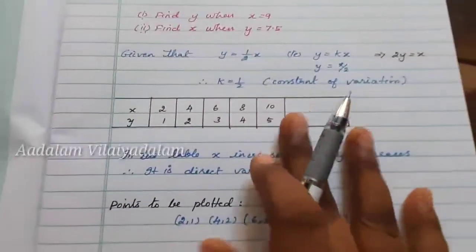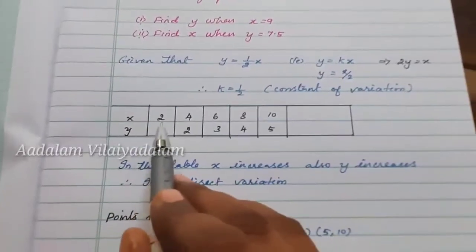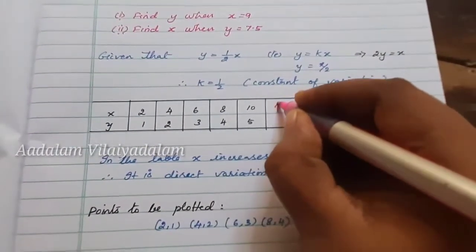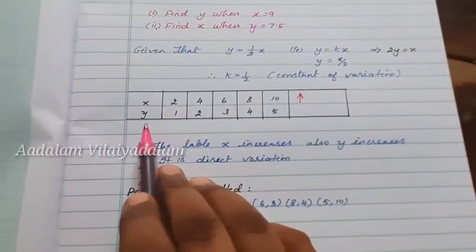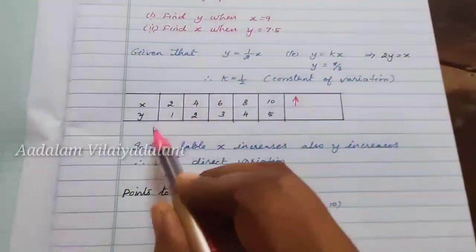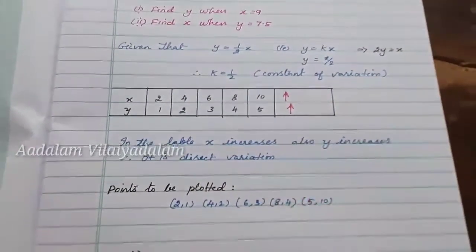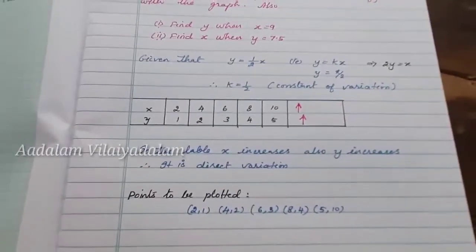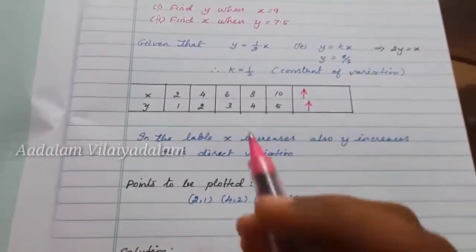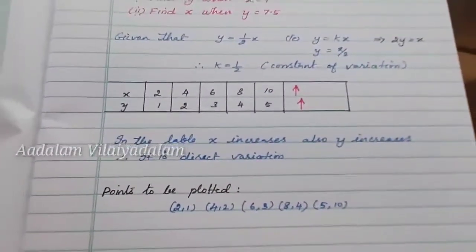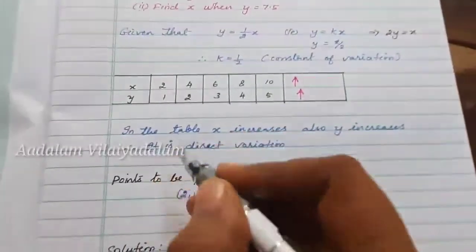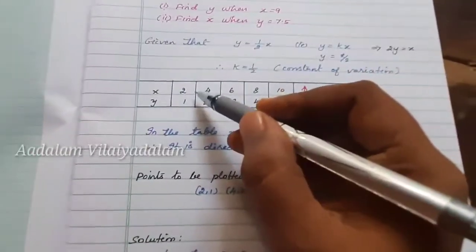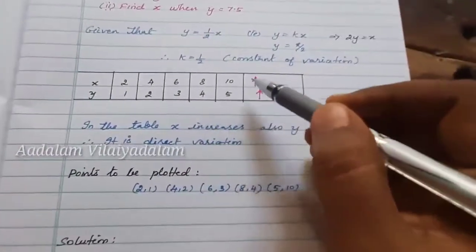In the table, x values — 2, 4, 6, 8, 10 — are all increasing. Y values — 1, 2, 3, 4, 5 — are also increasing. There are the same changes in both, so it is a direct variation. Therefore in the table, x increases and y also increases, confirming direct variation. Points to be plotted: (2,1), (4,2), (6,3), (8,4), (10,5).